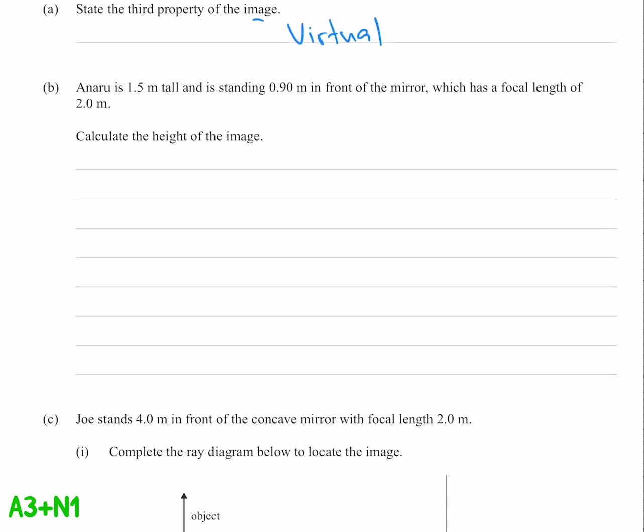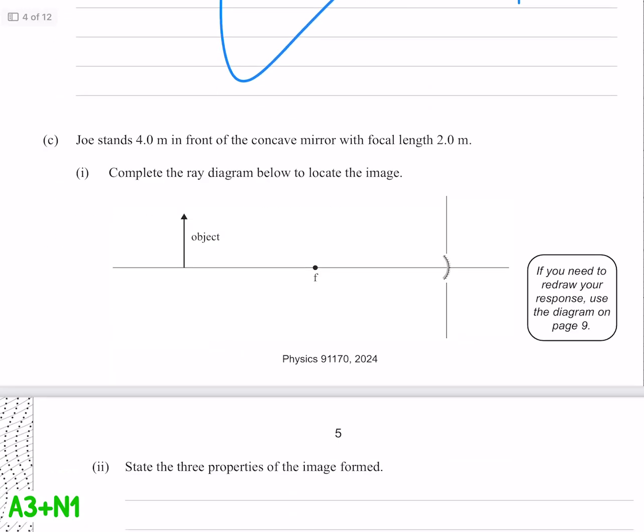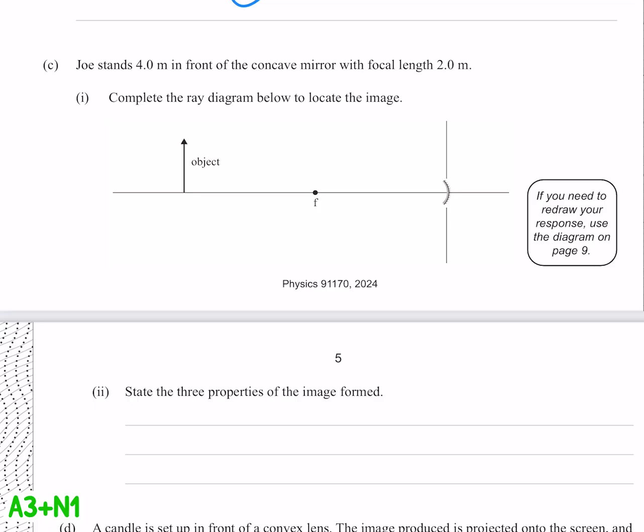Question B, here's a bunch of math we're not going to do. Question C wants us to do a ray diagram. Our first ray goes parallel to the axis and then through the focal, and that'll do us for achieved.